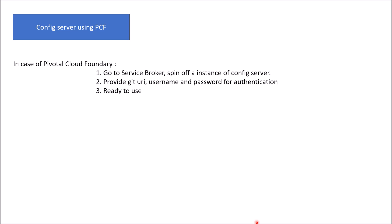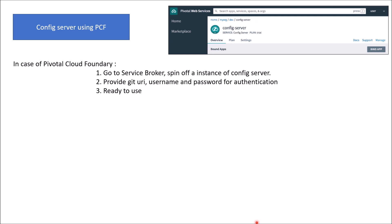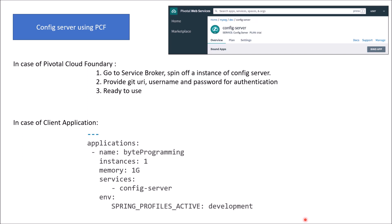For a pictorial representation, a screenshot of the config server shows a service named config-server with settings, plan, and overview options. You can bind client applications through the 'bind app' option, so all client applications appear in the bound apps context. For the client application in Pivotal Cloud Foundry, add the service name property in bootstrap.properties or bootstrap.yaml — in this example, the service name is config-server, matching the name shown in the screenshot.